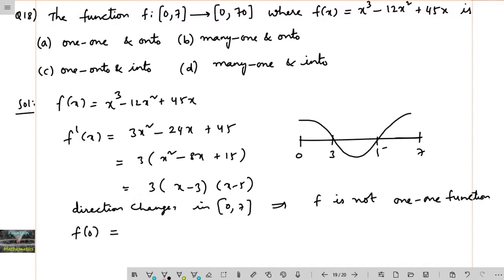Let me check with f(0). If I take f(0), that will be 0. If I take f(3), f(3) = 3³ - 12(3²) + 45(3). On simplifying, you will be getting 54.